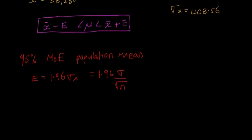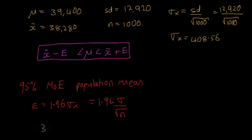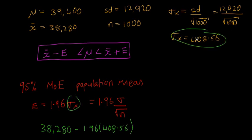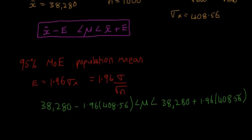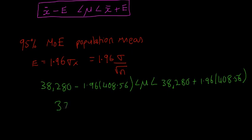So x bar is going to be 38,280 minus E, which is 1.96 times 408.56, because that's our sigma x, which is up here, top right corner. And that should be below mu, and then mu should be the other side of the interval, which is going to be 38,280 plus 1.96 times again 408.56. So we scroll down, and we'll end up with 37,479.2 less than mu. And on the other side, we're going to have 39,080.8. Okay, draw a big box around it.